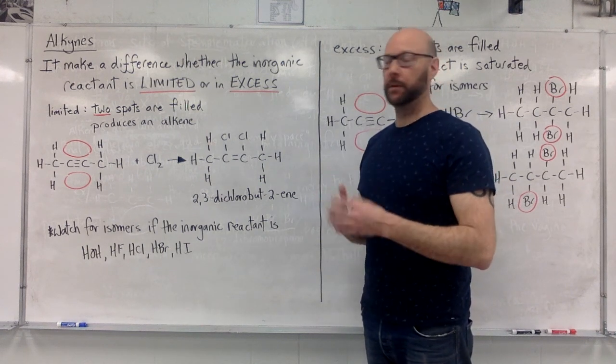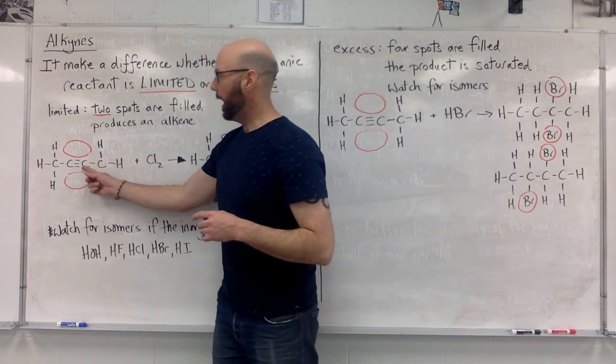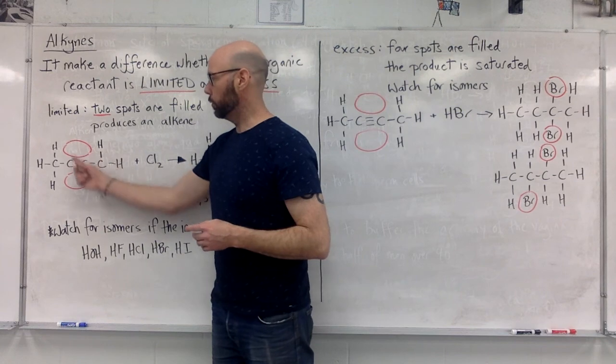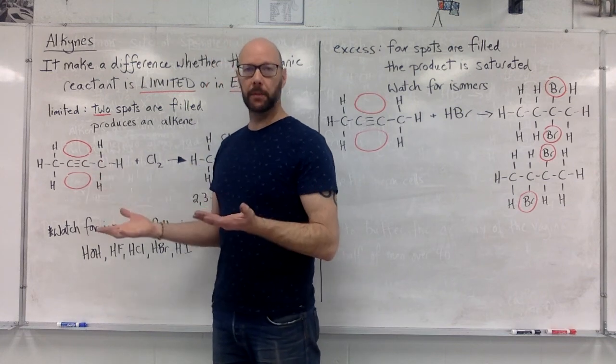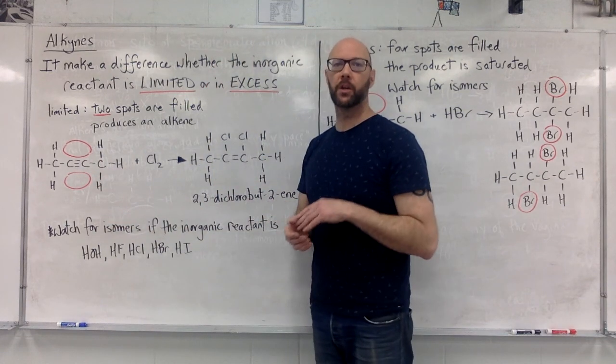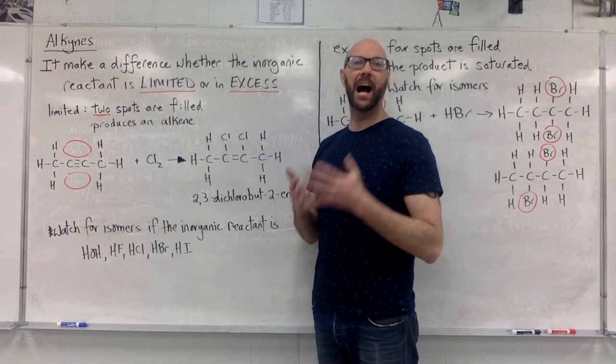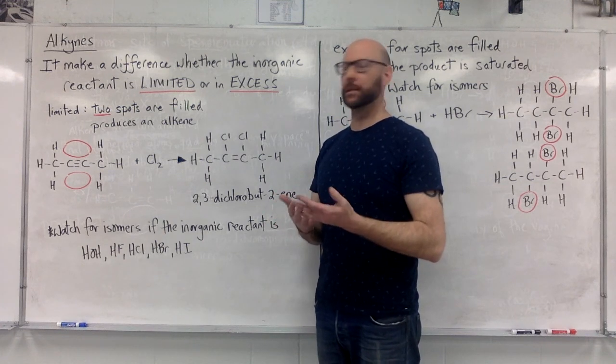So we're starting with an alkyne. This is the triple bond and it's like there's four unfilled spots: one, two, three, four. In the limited situation, two of those four spots are going to be filled by the inorganic reactant and we're going to end up producing an unsaturated alkene.